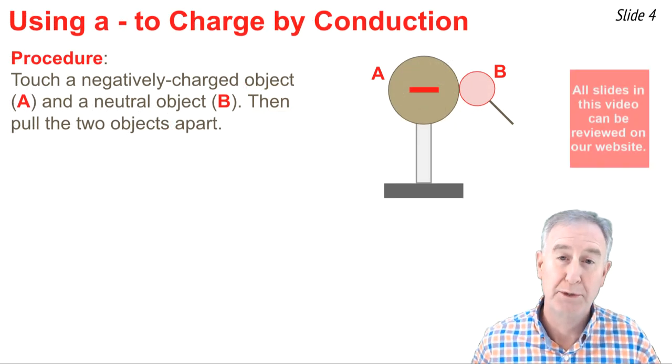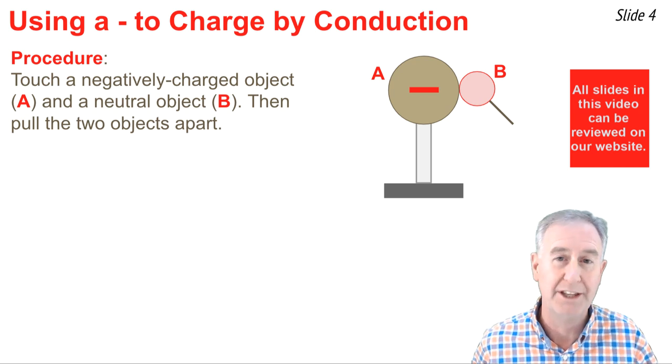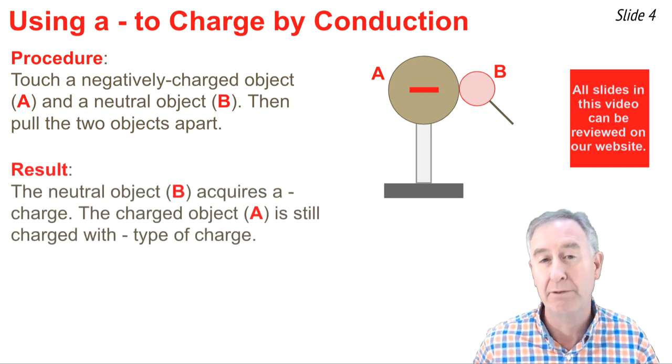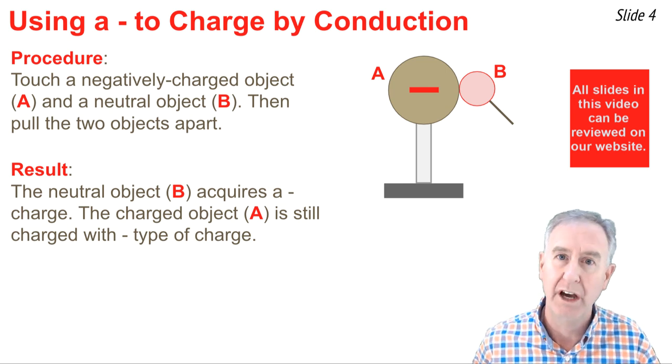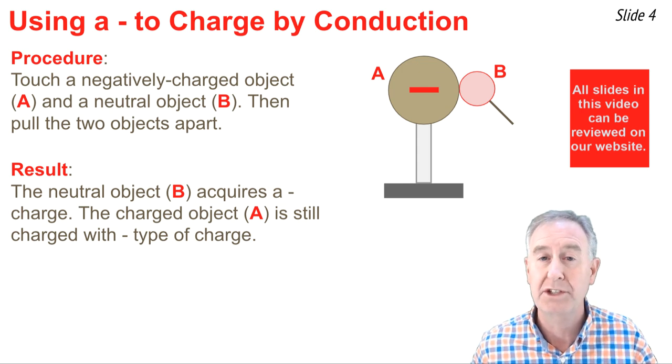If the charged object, object A, is negatively charged, and we use it to charge object B, the neutral object, then B, of course, will acquire a negative type of charge. And A, when done, will still have a negative charge, just less of it than it had before. How do we explain this?